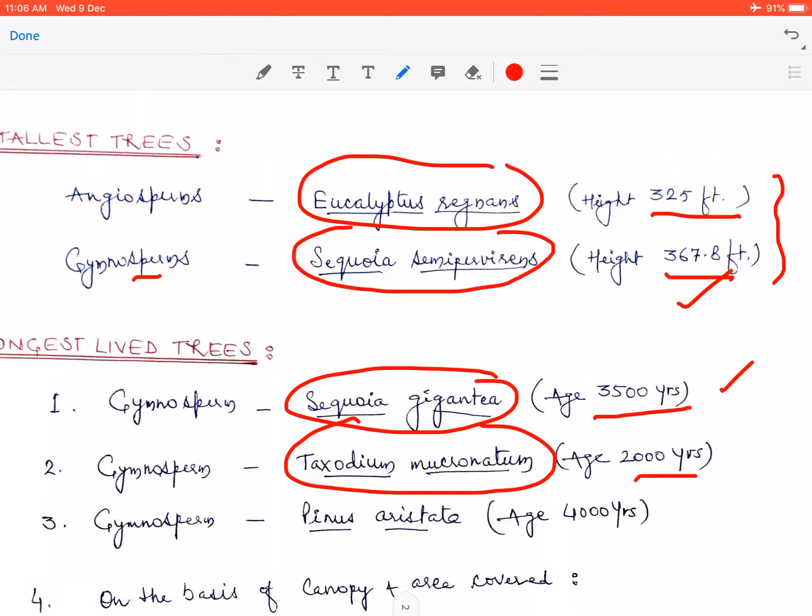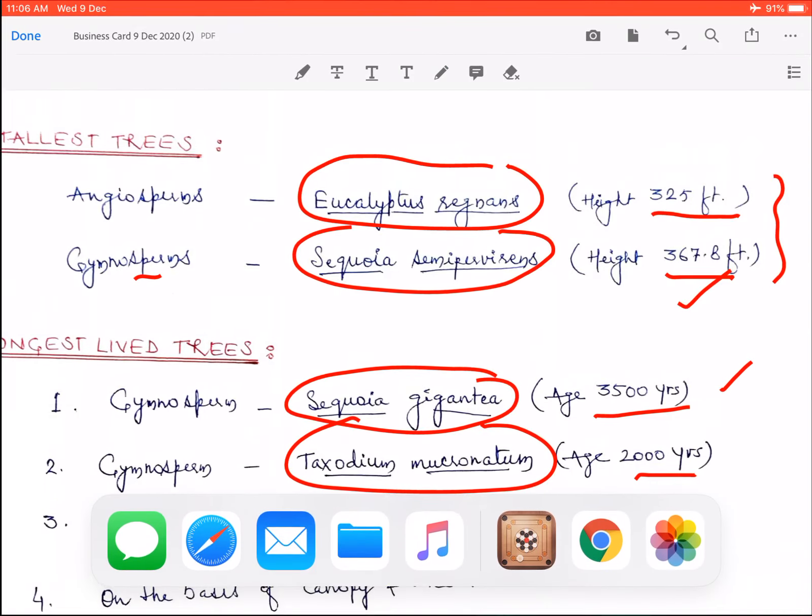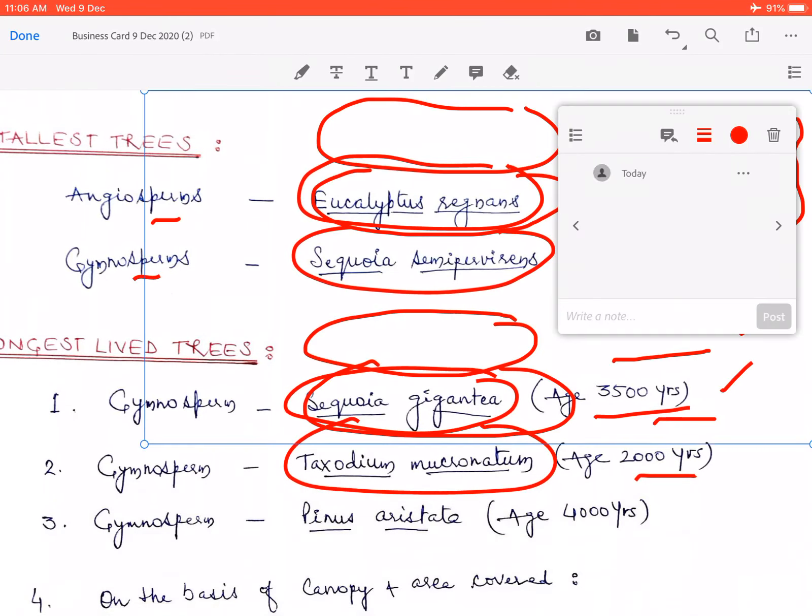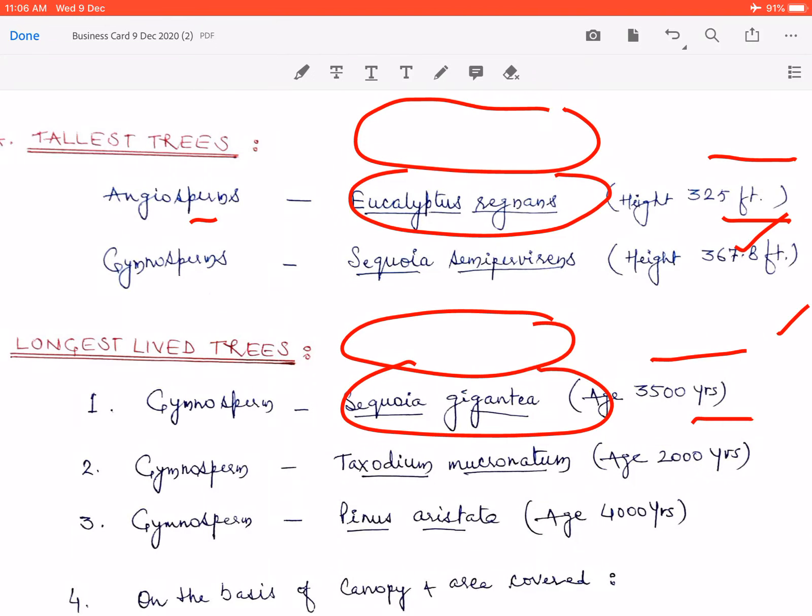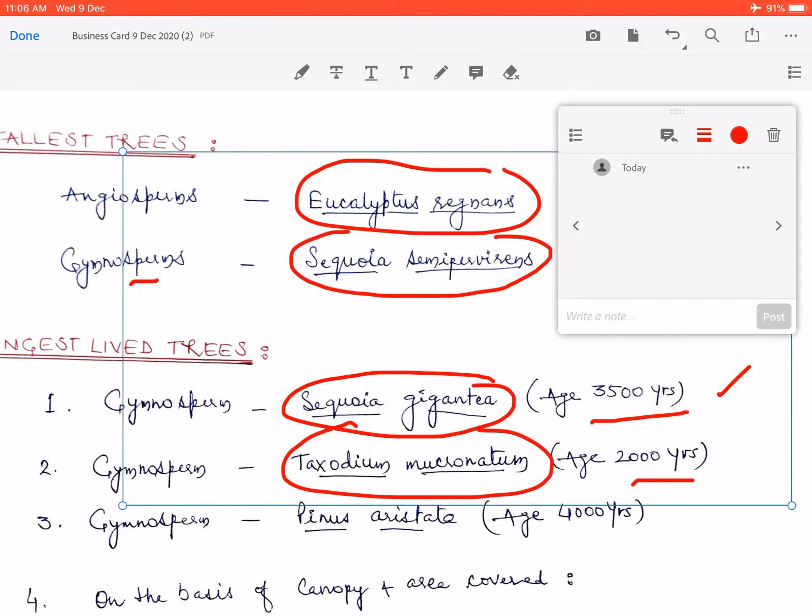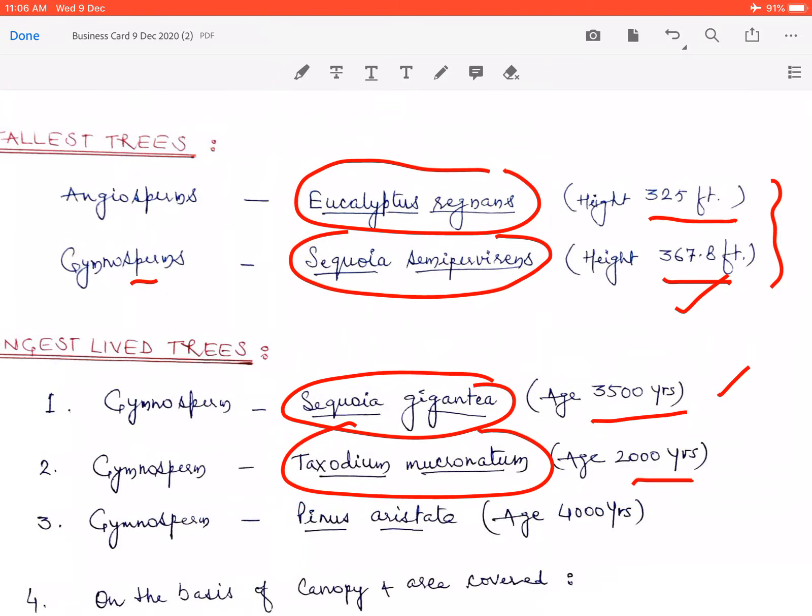Iske baad ek aur gymnosperm ki hum baat karte hain aur woh gymnosperm hai Pinus aristata. Ye jo Pinus aristata hai, yahan par aap dekh rahe hain ye tisre number pe jo naam likha hua hai. This is Pinus aristata jiski age karib 4000 years ke karib mani gayi hai aur ye Inyo National Forest California mein ugha hua hai.